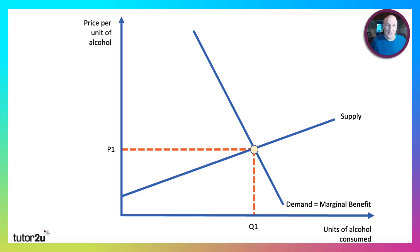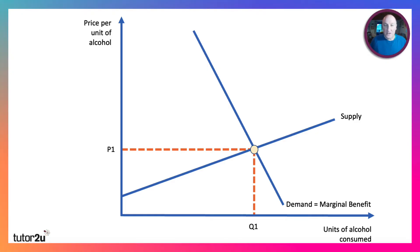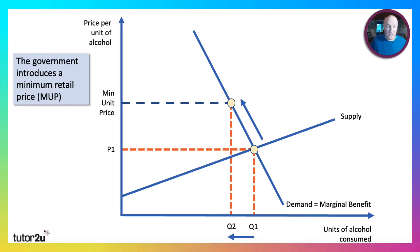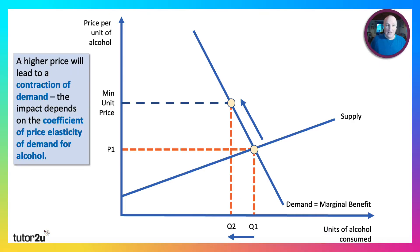If we think about minimum prices for alcohol, the idea is that you're trying to reduce consumption below Q1 — the initial private equilibrium where supply meets marginal benefit. The main aim of minimum pricing is to stop retailers from selling alcohol very cheaply, so you have to set it above the normal price. Bringing in a minimum unit price (MUP) causes a contraction of demand — fewer units of alcohol bought at that price. Real incomes go down and effective demand is squeezed. This does depend on the elasticity of demand for alcohol.